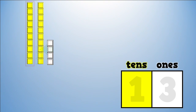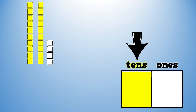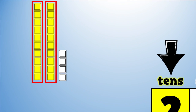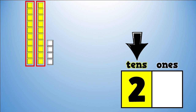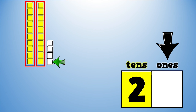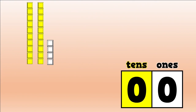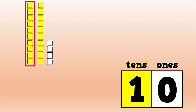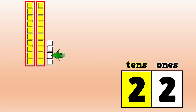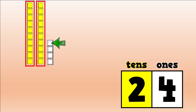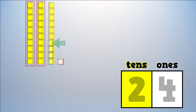Let's try another one. How many groups of tens do we have now? Count the groups: one, two. Two towers of ten. Now let's count the extra ones: one, two, three, four. There are four extra ones. What number did we make? Twenty-four. Right. Let's skip count and then count on to check: ten, twenty, twenty-one, twenty-two, twenty-three, twenty-four. We got it!